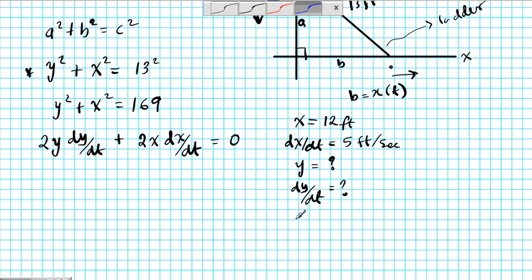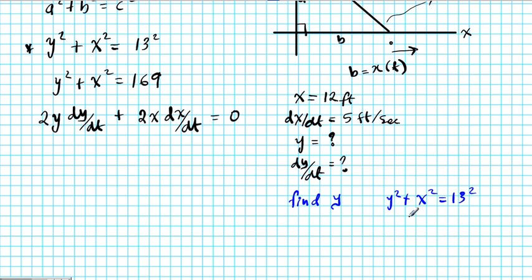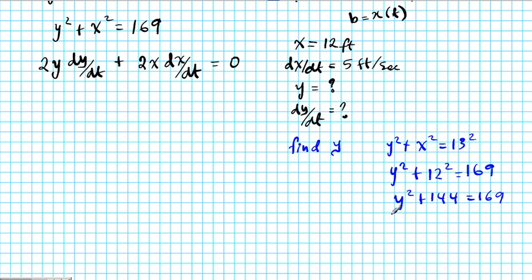So to find y, we're going to use y squared plus x squared equals 13 squared. This is due to the Pythagorean theorem. So y squared remains y squared plus 12 squared equals 169. We're going to have y squared plus 144 equals 169. So subtract 144 from both sides, and then we're going to have y squared equals 25. If y squared equals 25, y is simply 5 feet. So the missing value that we needed to solve for dy/dt is 5. So y is 5 feet. Now we're good to go because we have one equation and one unknown.